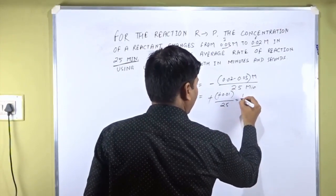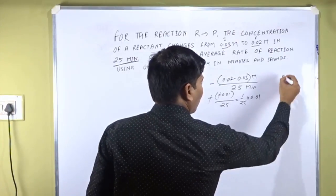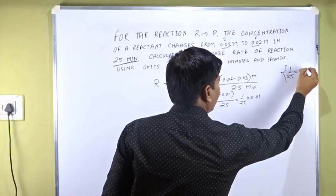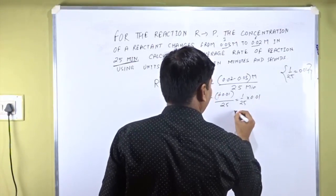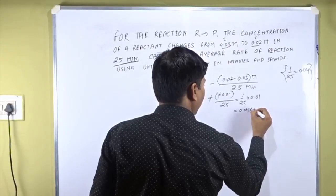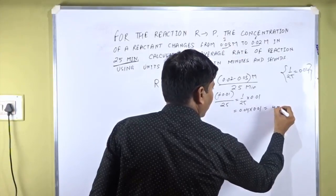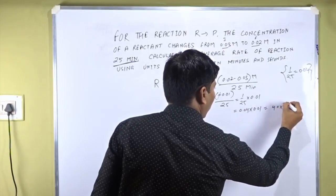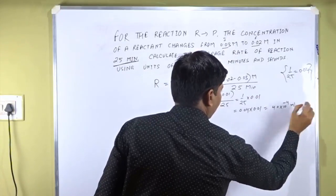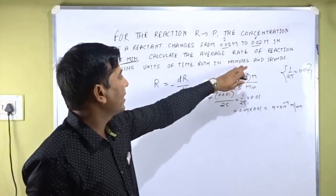This can be written as 1/25 multiplied by 0.01. Since 1/25 equals 0.04, it becomes 0.04 multiplied by 0.01, which gives us 4.0×10⁻⁴ molarity per minute. This is the average rate of reaction for this reactant expressed in minutes.